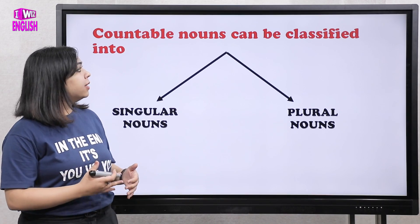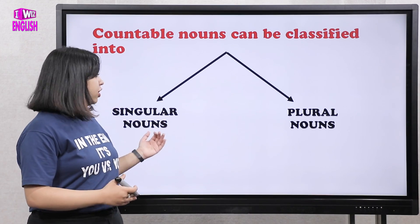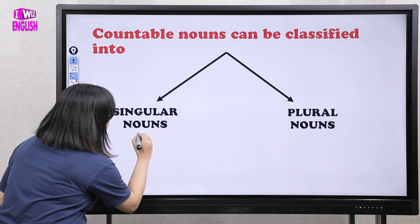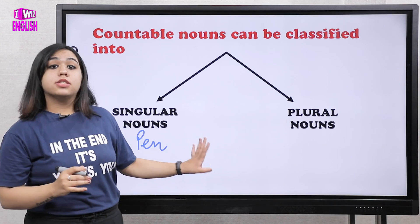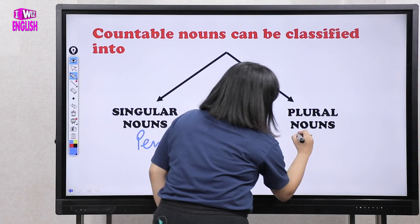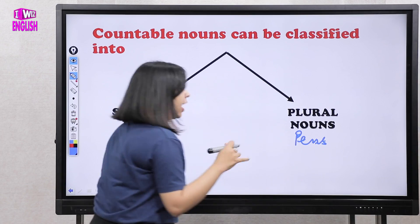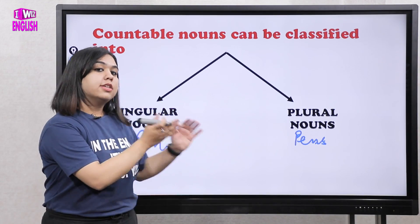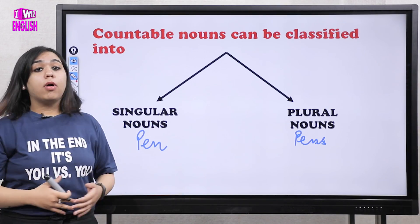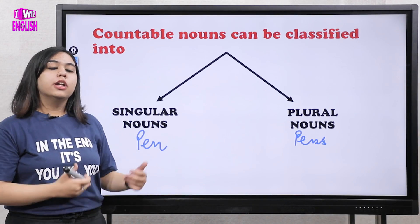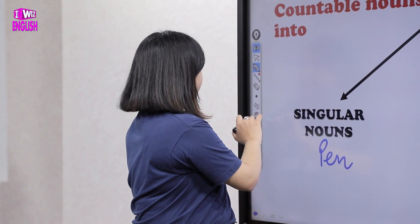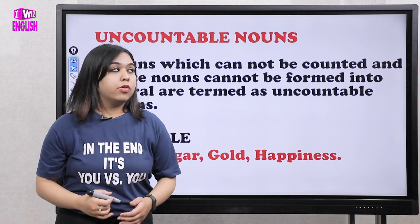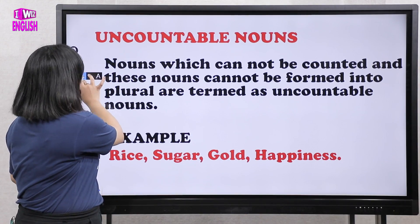Countable nouns can be classified as singular and plural. If I say 'pen' that's singular, but 'pens' is plural. Similarly, book → books, table → tables. So countable nouns have both singular and plural forms.